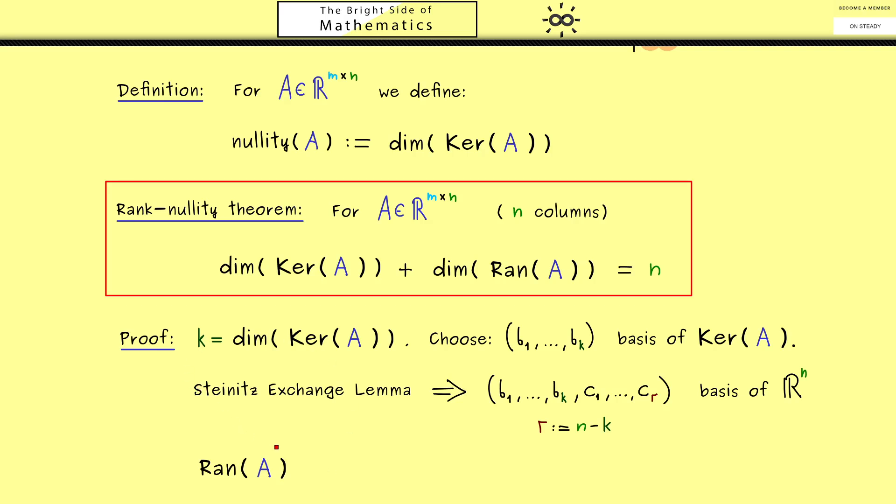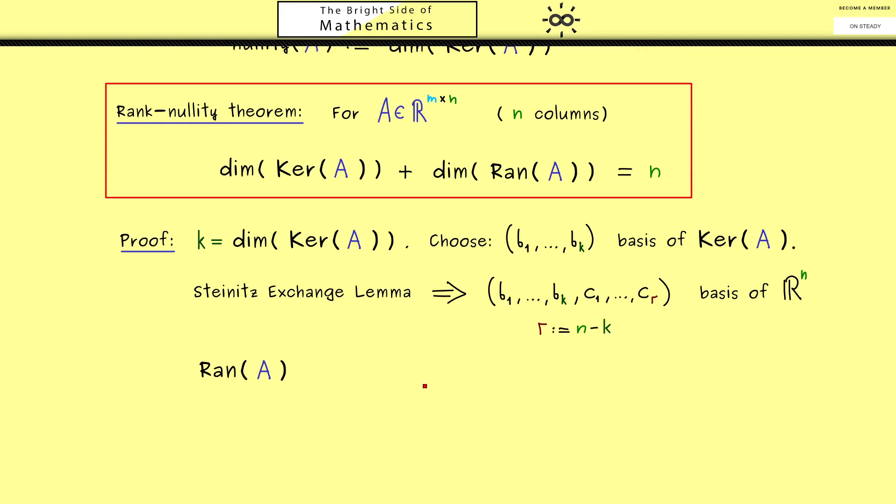Indeed, what we need to show now is that the dimension of the range of A is equal to our r here. Because then we can conclude from r plus k is equal to n our Rank-Nullity Theorem. Therefore, the work we have to do now is to see what the range of A is. Now to get the full range of A, we just have to apply the matrix to a basis of R^n. Therefore, we just take our basis here from above. So you see, we have A times the vectors, and then we look at the span of these outcomes. At this point, we can use the information that b_1 to b_k lies in the kernel of A. Hence all the first k entries here are represented by the zero vector. In other words, in the span we can simply omit it. So you see, in the span here we only have r vectors, which means the dimension of this span is definitely less than or equal to r.